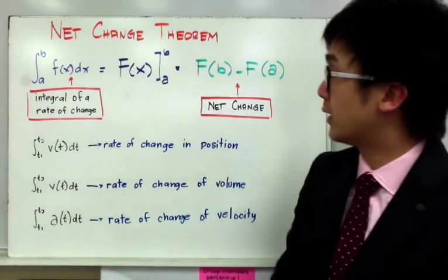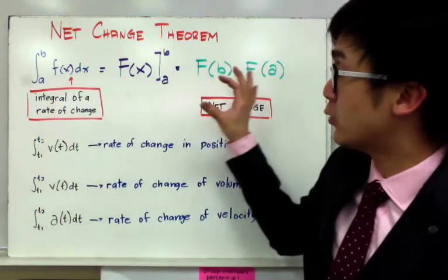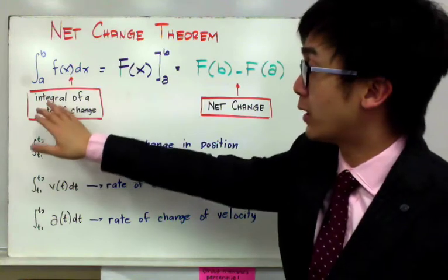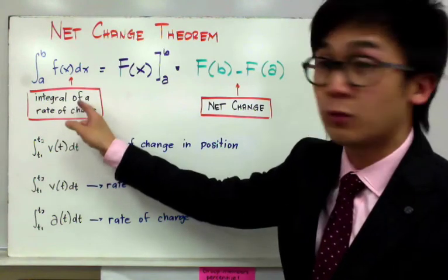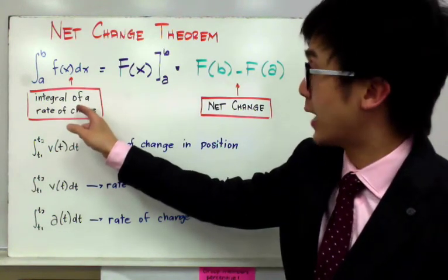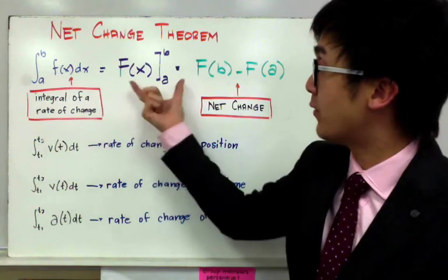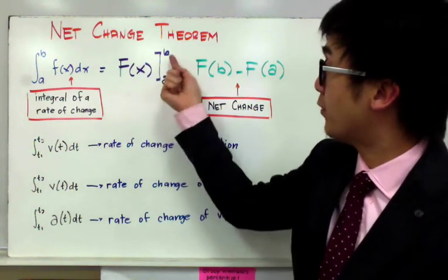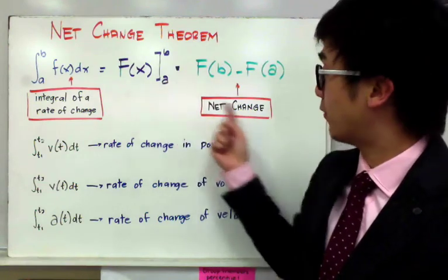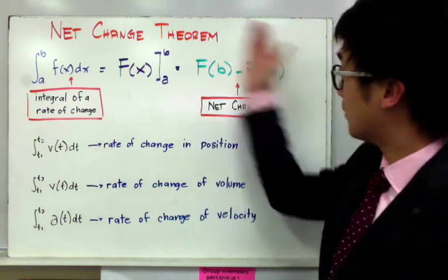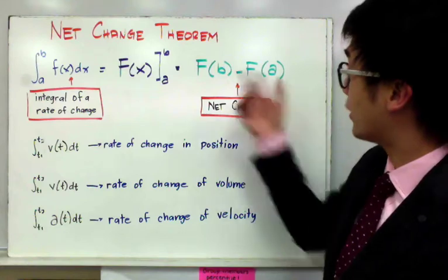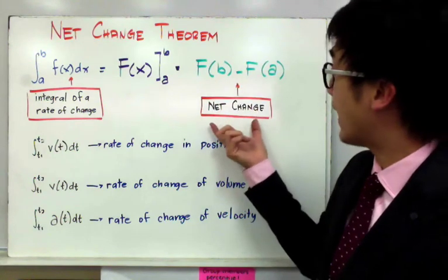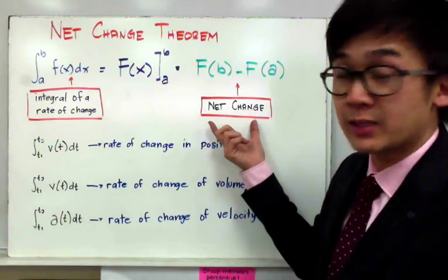The Net Change Theorem uses a notation for finding the integral of a given function, denoting that we are getting the integral of the rate of change of an object. This equals the definite integral of f(x) from a to b, which is f(b) minus f(a). This notation represents the net change of a moving object in a straight line.